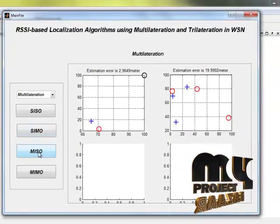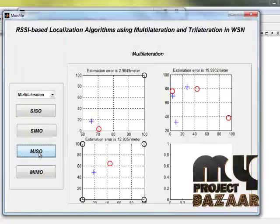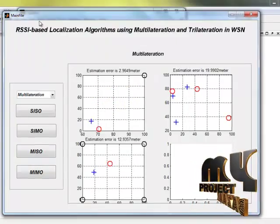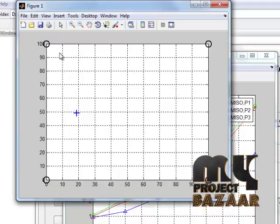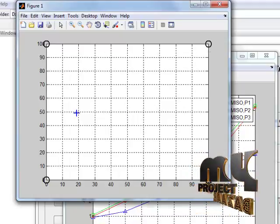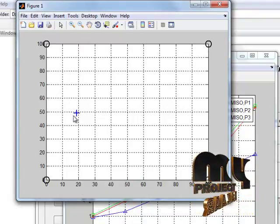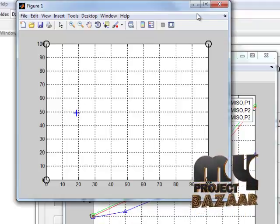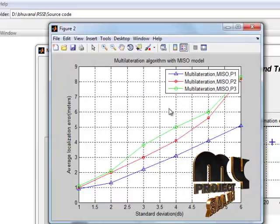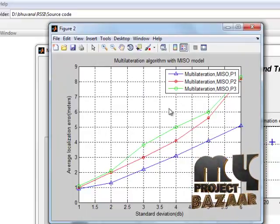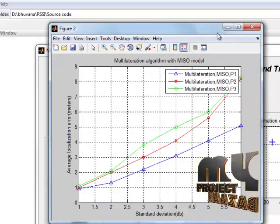Then MISO which means multi input with single output. See the inputs are multiple and the output is single. This is the graph plotted for MISO that is multi input with single output.